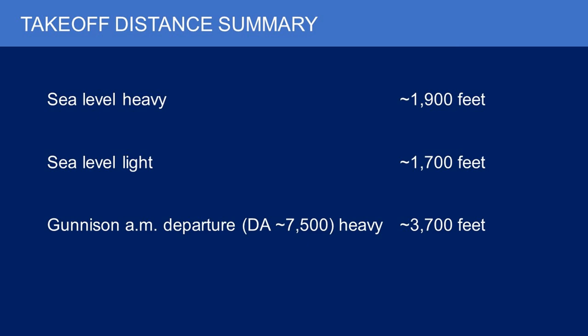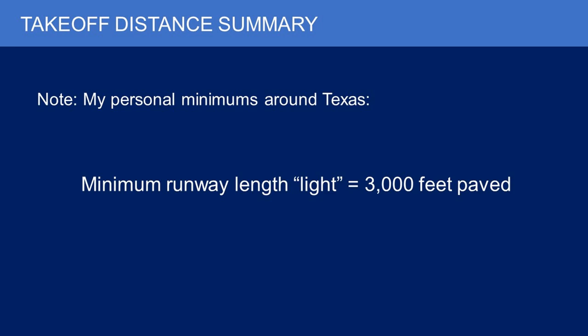For a high-altitude takeoff — an actual flight I've done from Gunnison, Colorado — an early a.m. departure before the density altitude picks up, density altitude around 7,500 feet and nice cool air, typically heavy. There were four of us on board with full tip tanks going nonstop from Gunnison to Vegas, and we used 3,700 feet of runway. It probably took almost double that to get up to 100 feet — it was a slow climb at that altitude until you get cleaned up and speeded up.